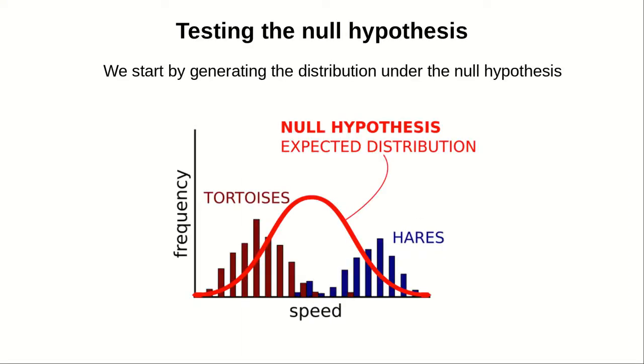How do we test a null hypothesis? We'll start by generating the distribution under the null hypothesis. In the case of the tortoises and the hare, we will see the two different distributions and an overlying null hypothesis, which is the expected distribution.